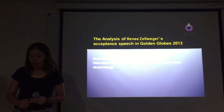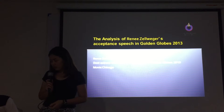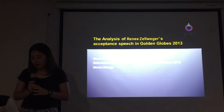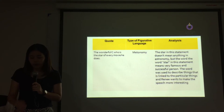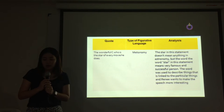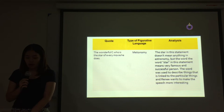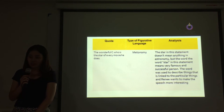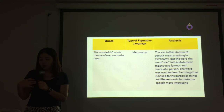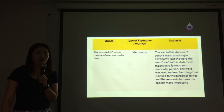Next, the analysis of Renée Zellweger's acceptance speech at the Golden Globe 2003 for the movie Chicago. She said, 'The wonderful John C., who is the star of every movie he does.' This is a metonymy — the word 'star' in this statement does not mean anything in astronomy, but rather means a very famous and successful person. The word was used to describe things that lead to particular things, and Renée wanted to make the speech more interesting.